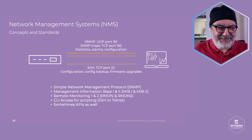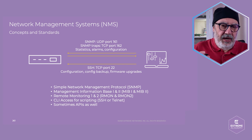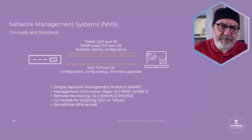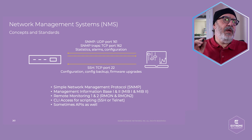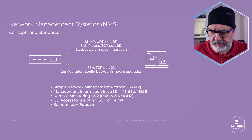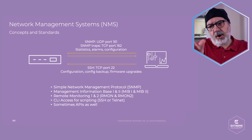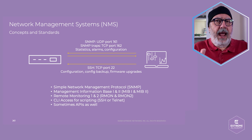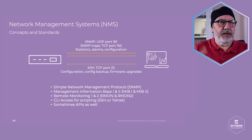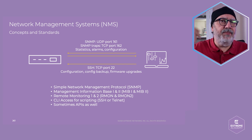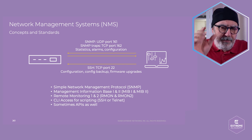Network management systems depend a lot on protocols, and the one most often used is SNMP — Simple Network Management Protocol. This protocol uses UDP, not TCP, and operates on ports 161 and 162. It gives you statistics, alarms, configurations, and alerts — that type of stuff.